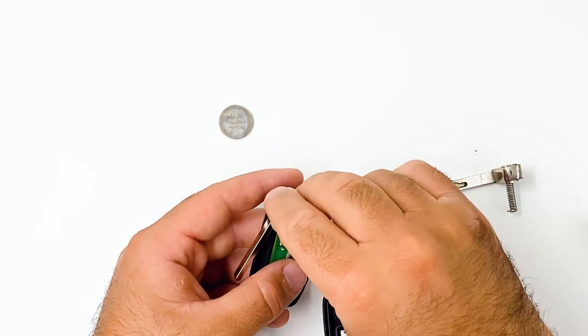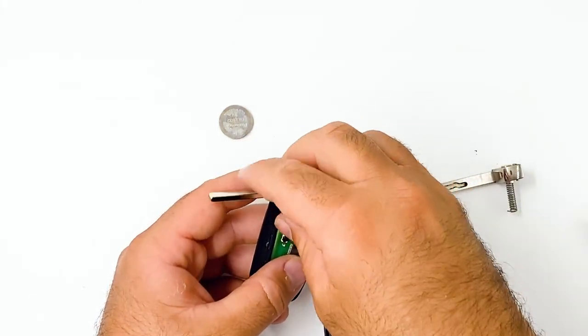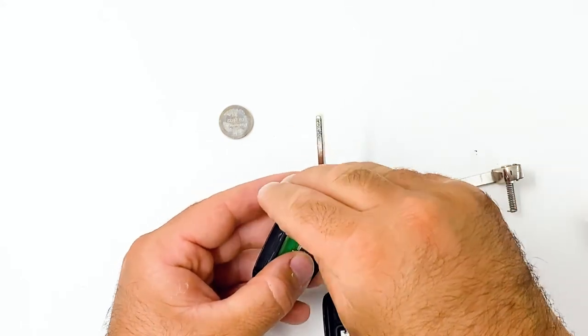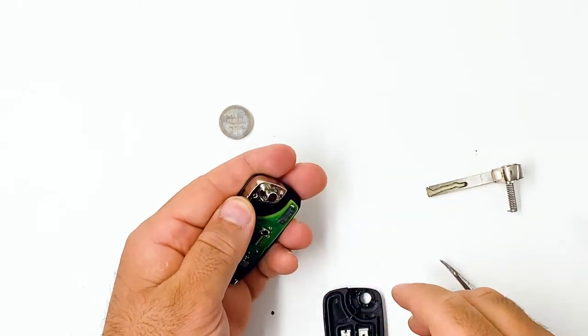And this has to go in a certain way. So keep twisting it until it falls in like that. And we want it to flick out, so we've got to tension it. Turn that that way. Put it down like that.